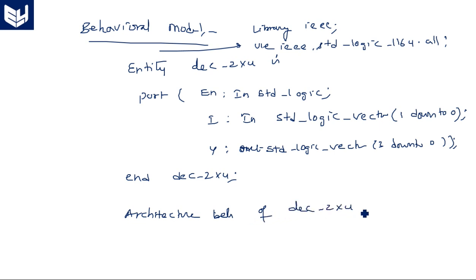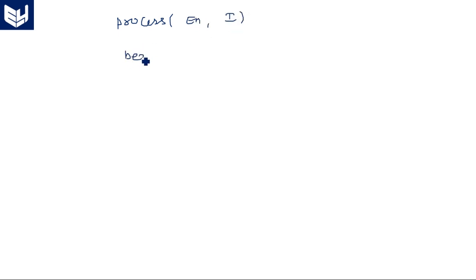For the architecture: 'architecture behavioral of decoder_2to4 is begin'. We use conditional statements with if-else. Since enable and i change with time, we write a process statement: 'process(enable, i) begin'. Then: 'if enable = '1' then'.